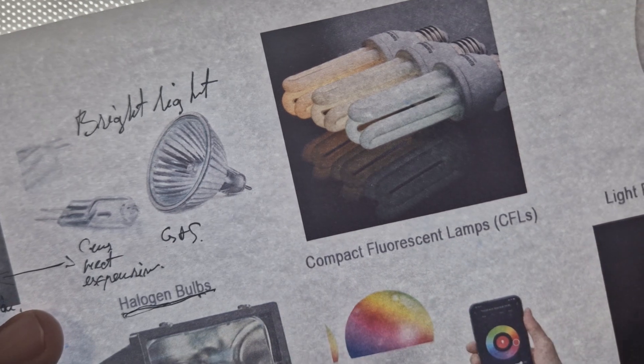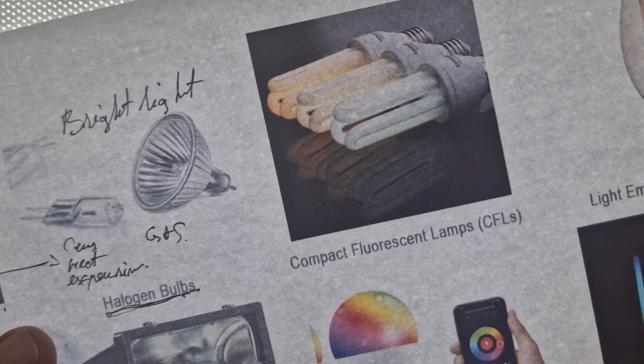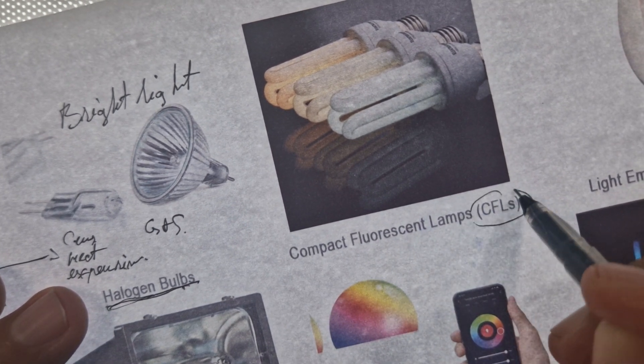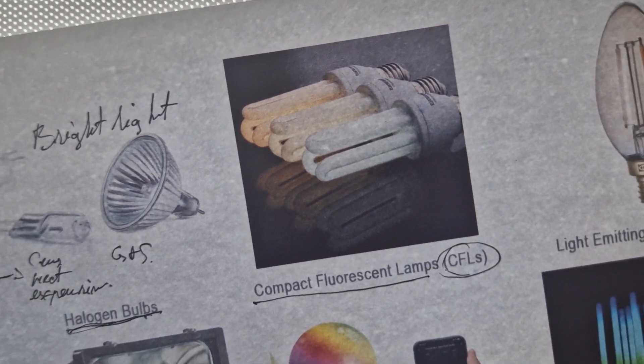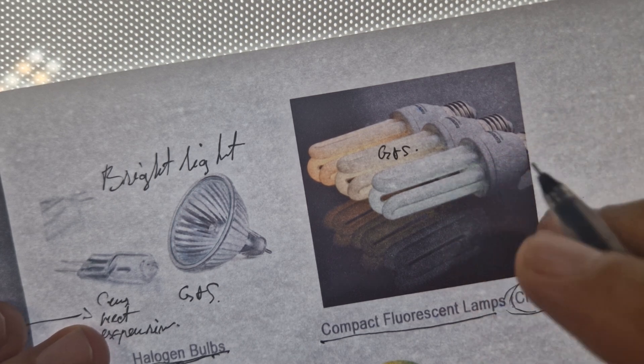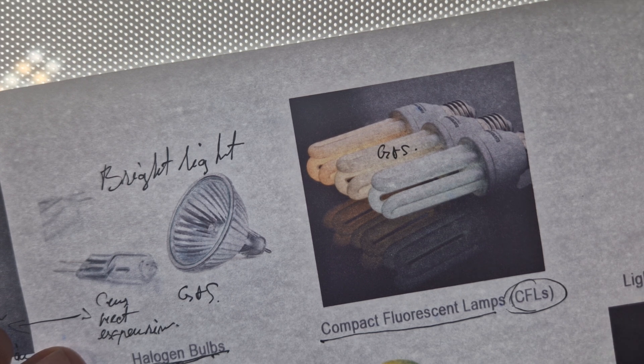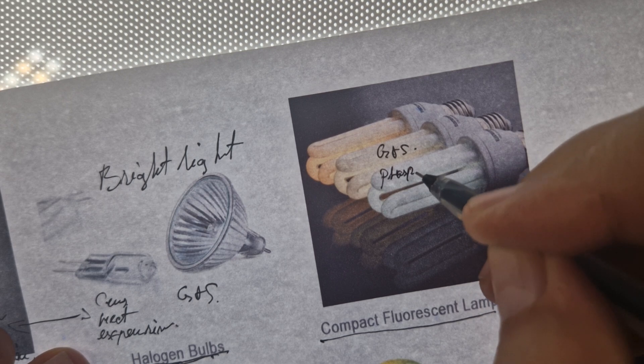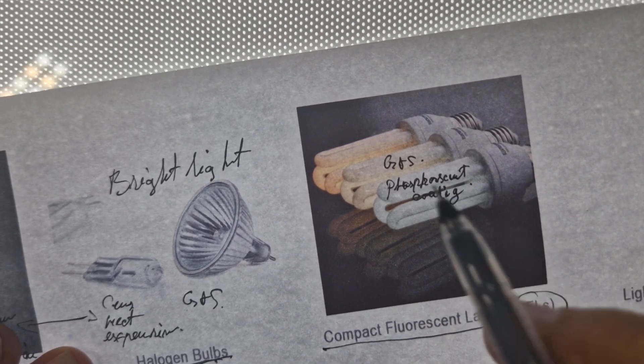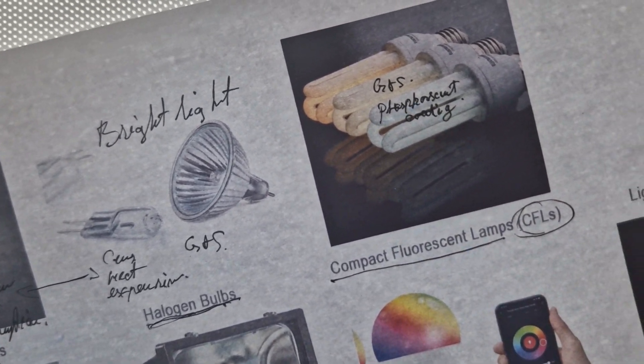Next, it's a more advanced bulb called Compact Fluorescent Lamps, or CFLs. How they work? These ones use again a gas, but also a phosphorescent coating to produce light. So it's somehow a halogen bulb more developed or advanced.